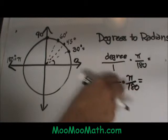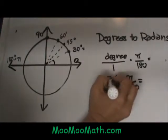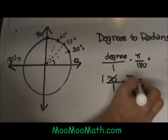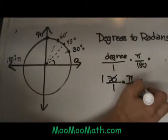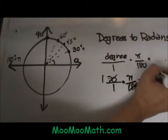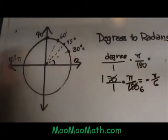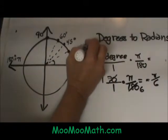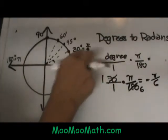I can now reduce this. I can do a cross reduction. 30 goes into itself once. 30 goes into 180 six times. I am left with pi over 6. That is the value of 30 degrees in radians.